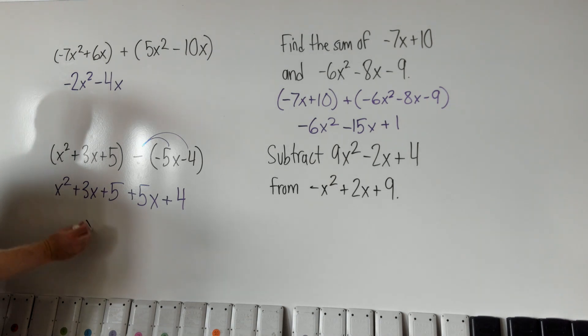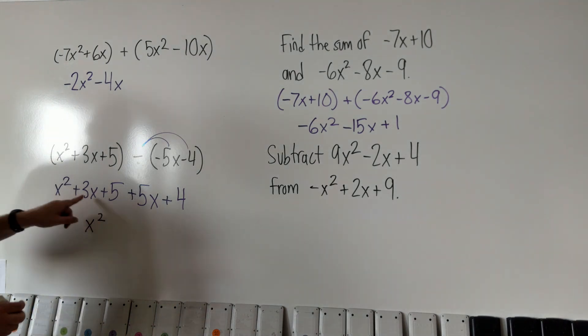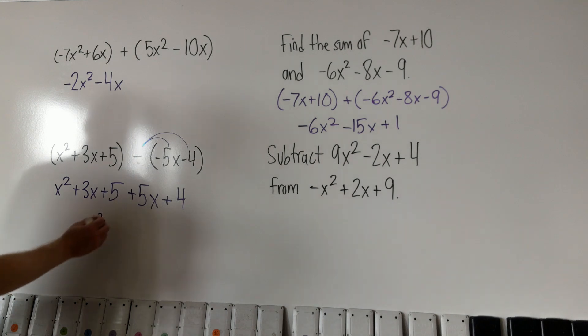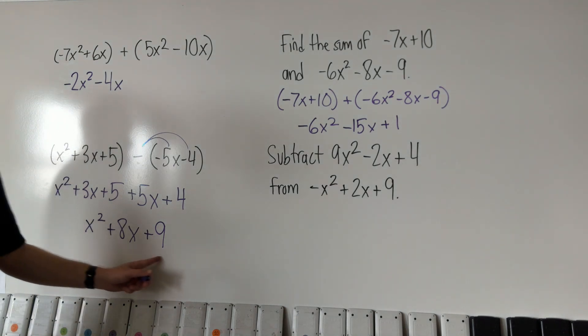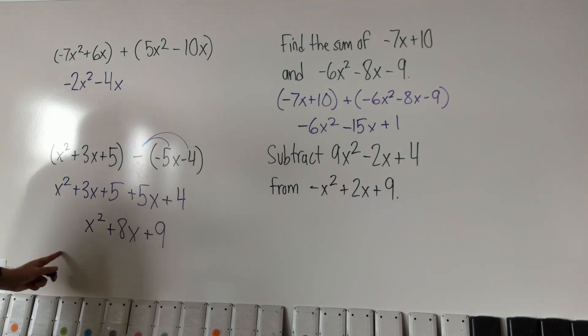We have only this x squared, there's no other x squareds. We have 3x plus 5x is 8x. And we have 5 plus 4, which is 9. So that's the answer, x squared plus 8x plus 9.